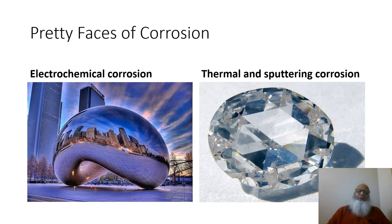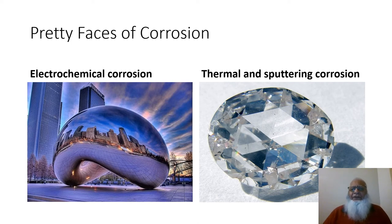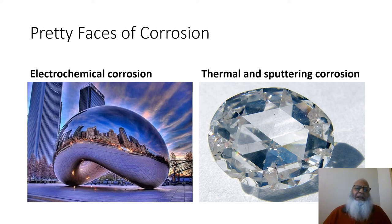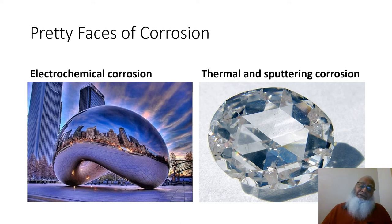This slide shows the pretty faces of corrosion — corrosion is not always as ugly as it is understood. There are many positive applications, which I call pretty faces in my earlier YouTube videos. The picture on the left shows electrochemical polishing, where corrosion must occur first before the surface becomes smooth and reflects light uniformly and looks beautiful. The slide on the right shows thermal sputtering, where metal corrodes and is then deposited on a substrate — this is how an artificial diamond is made.